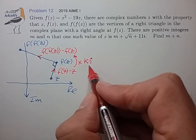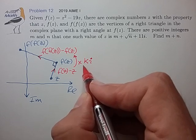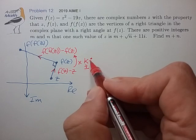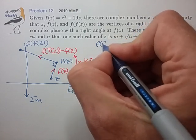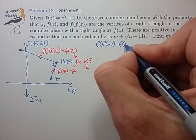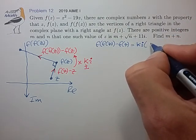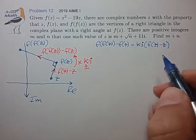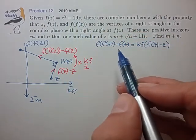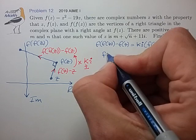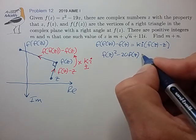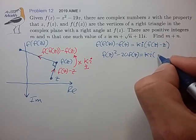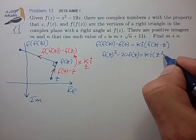We also don't know whether it's a positive or negative 90-degree rotation, so we have to allow the scale factor to take on positive and negative values to account for both directions. So the algebraic condition is: f(f(z)) minus f(z) equals ki times (f(z) minus z). Let's substitute this function in two steps — writing the left side as f(z)² minus 20·f(z), and the right side as ki times (z² minus 19z).